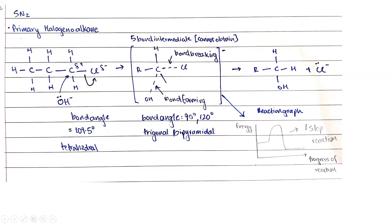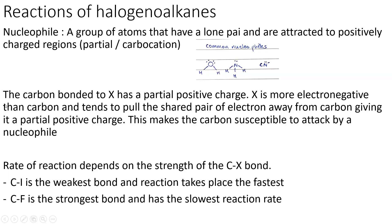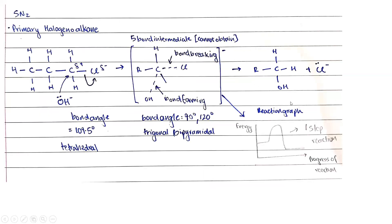The first mechanism is SN2 — nucleophilic substitution. For a primary halogenoalkane, the carbon bonded to chlorine has two hydrogens and one alkyl group. The bond angle is 109.5° because it is sp³ hybridized with a tetrahedral geometry. You must show a partial positive charge on the carbon and partial negative charge on X due to the electronegativity difference.